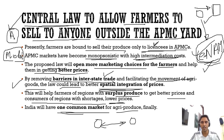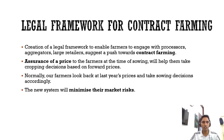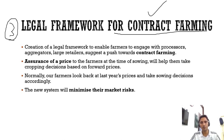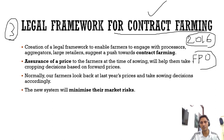UPSC may ask questions about the eNAM project in prelims, so you must know about it. Now we come to the third measure announced by the government — the legal framework for contract farming. Contract farming is a very important concept for both mains and prelims. UPSC already asked a question about contract farming in 2016 and may ask again. Questions could also come regarding Farmer Producer Organizations, which government has been mentioning constantly in budget speeches.